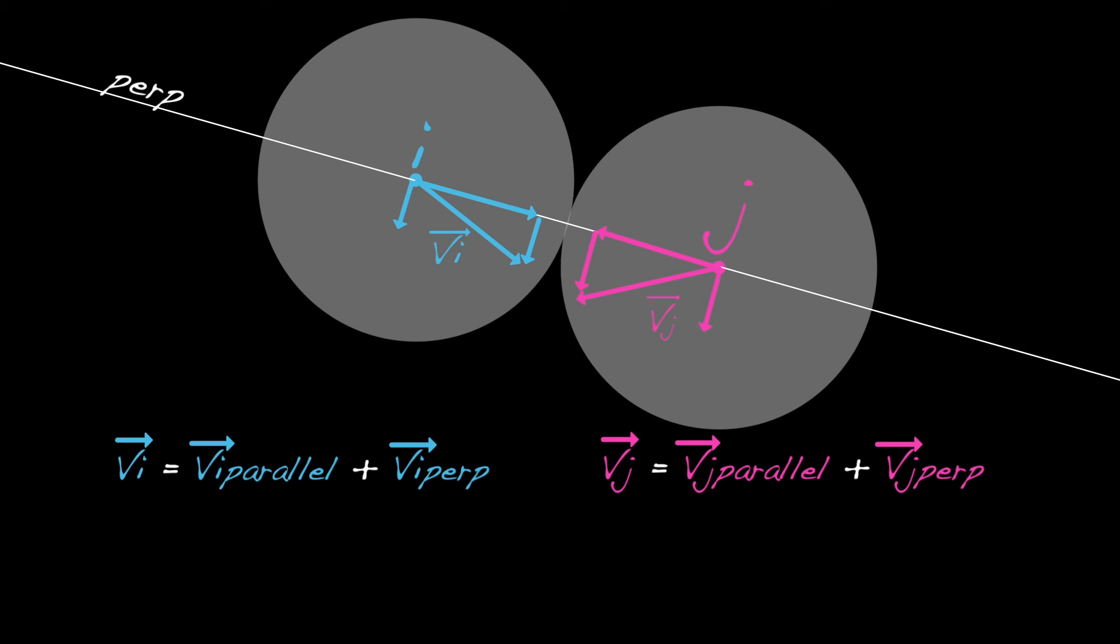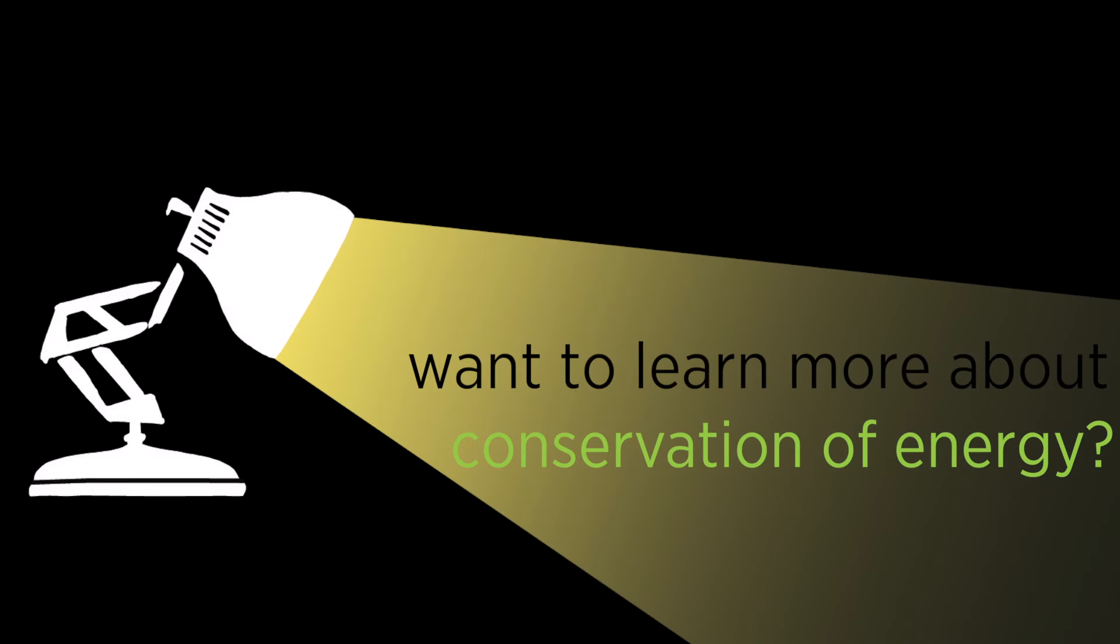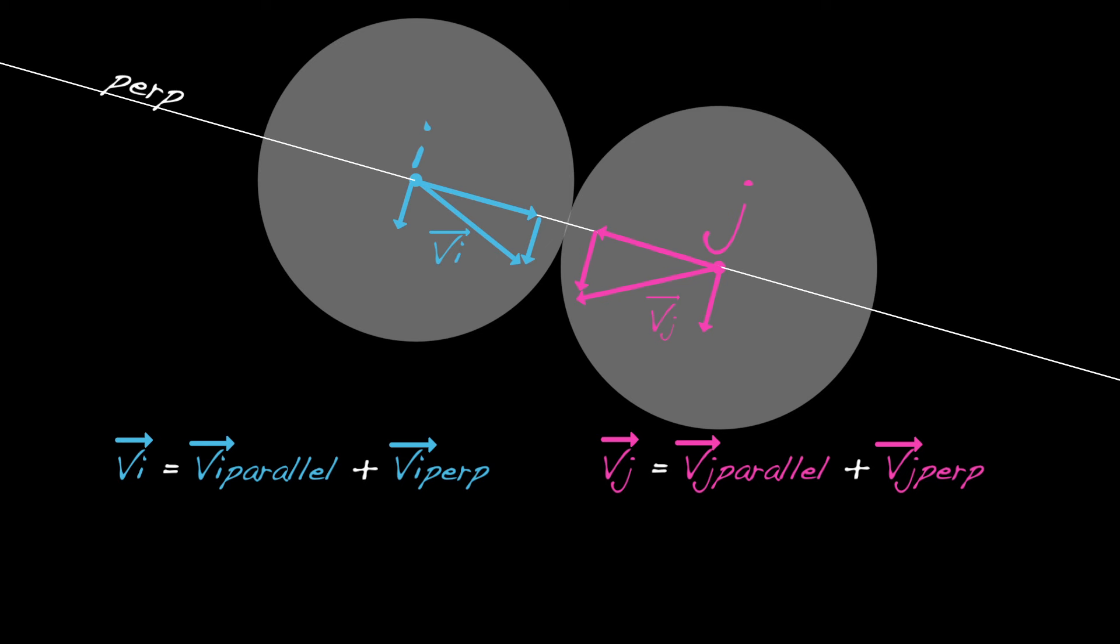To figure out exactly what happens in the perpendicular direction requires using more advanced topics, namely conservation of energy and momentum. If we apply those concepts and assume that the particles have the same mass, we find that particle i gets j's perpendicular velocity and vice versa.